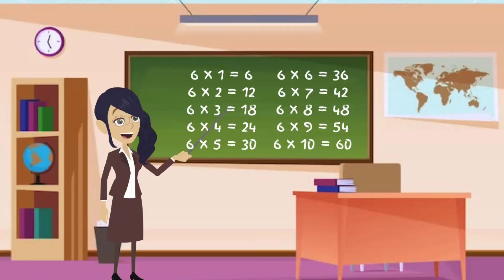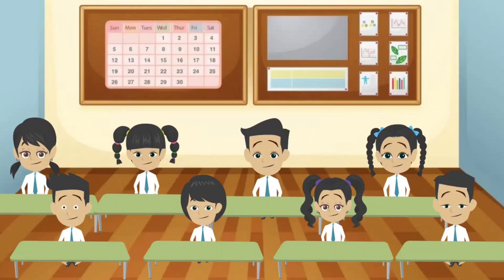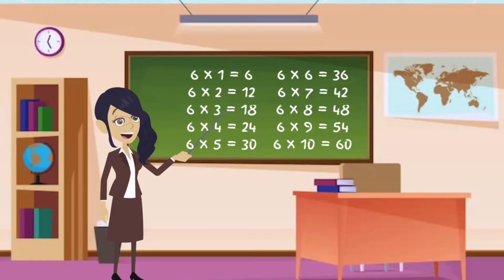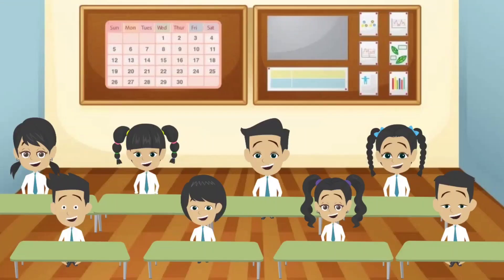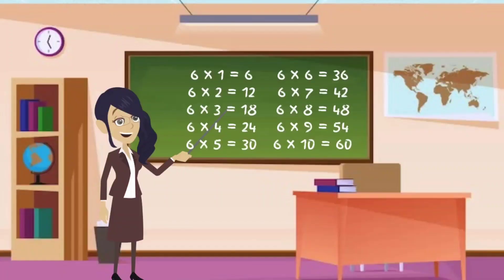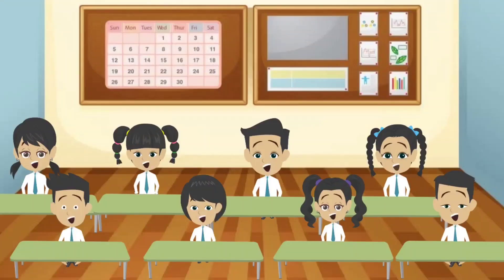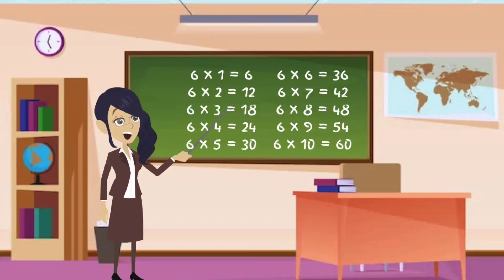6 1s are 6. 6 1s are 6. 6 2s are 12. 6 2s are 12. 6 3s are 18. 6 3s are 18. 6 4s are 24. 6 4s are 24. 6 5s are 30.